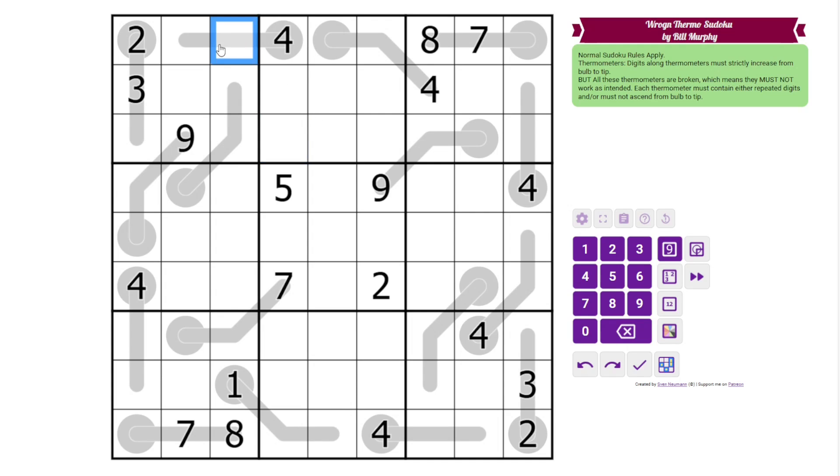But we could not have 4, 6, 8 in this case because that would be a valid thermo. We can't have any valid thermos in this puzzle. So those are the rules, and we're going to start here.